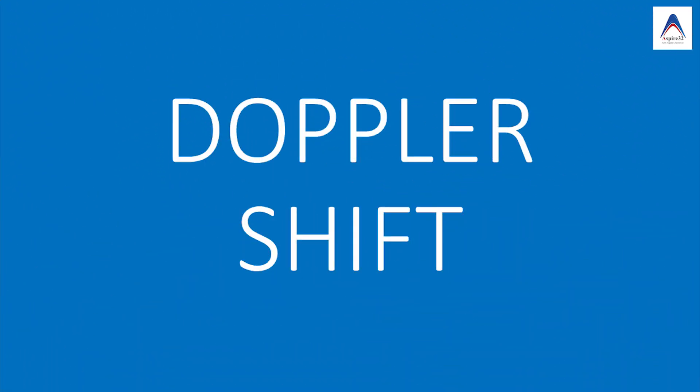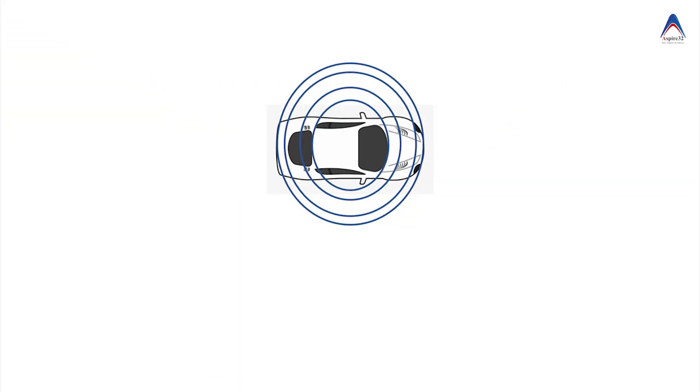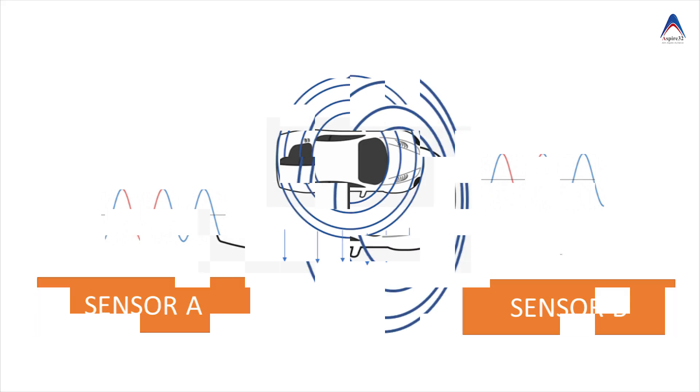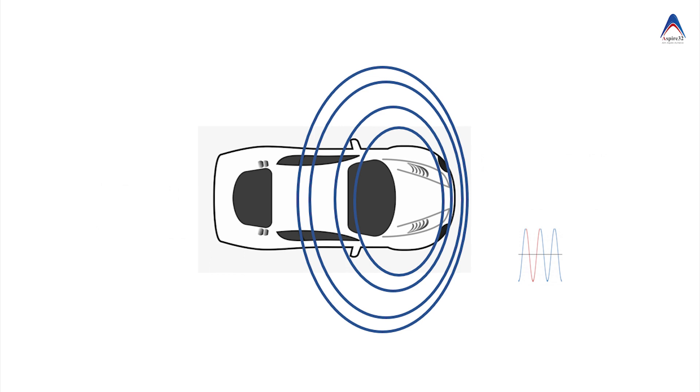In order to understand the laser Doppler flowmetry, let us first understand what is Doppler shift. For example, you have a car in which a person is blowing the horn, and if you have kept a sensor A and sensor B to receive this sound and measure the frequency, then the frequency recorded by sensor A and sensor B will be the same in this situation because the car is stationary and the sensors are equidistant from the car.